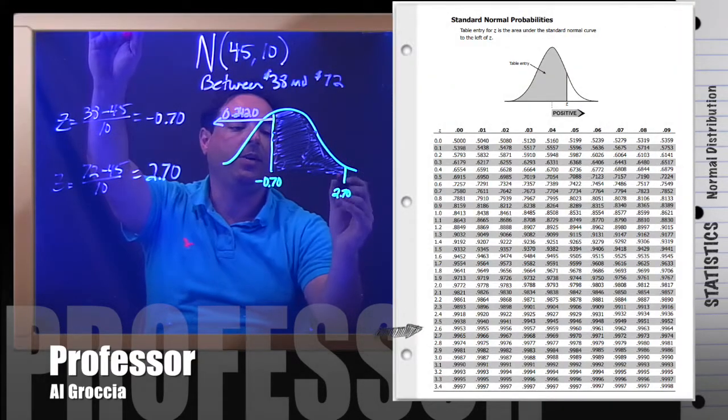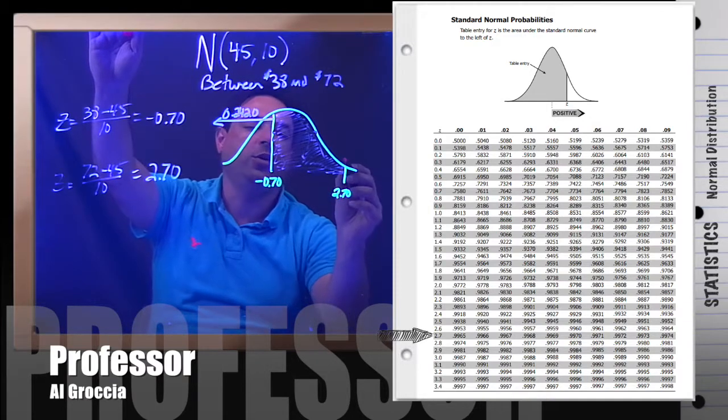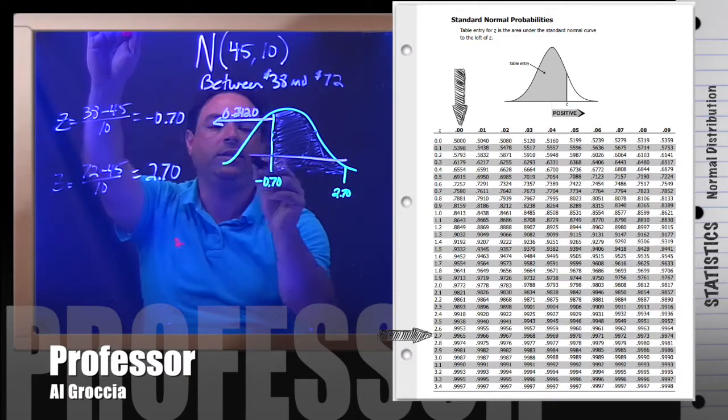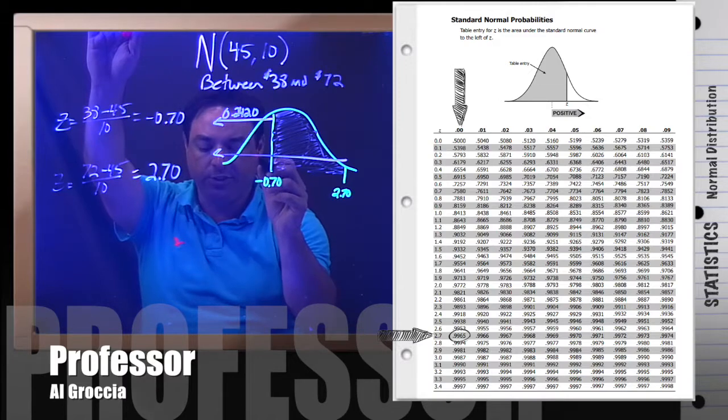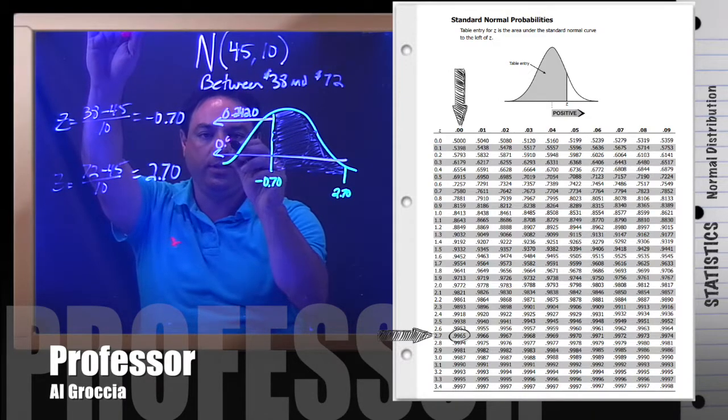And then if you look up 2.70 in the positive, 2.70, that would be from this point down. The table always tells you less than. That would be 0.9965.